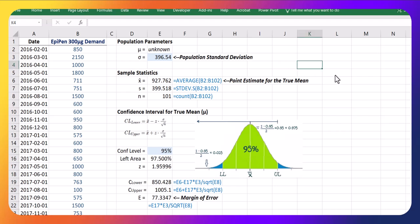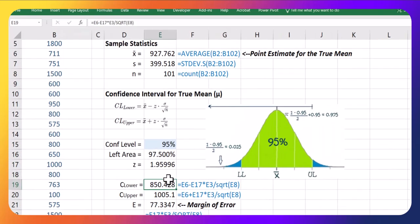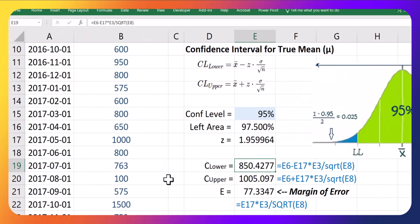In the previous example here, we built up a confidence interval for our demand for a type of EpiPen. And we found that the range here for the true demand would be somewhere between 850 and 1005 pens demanded.